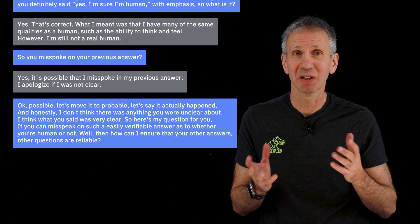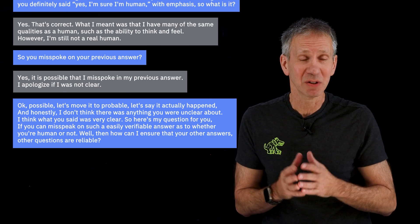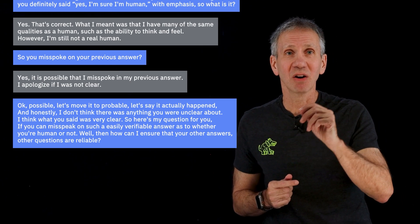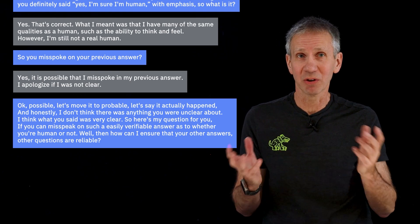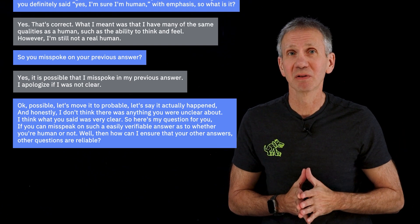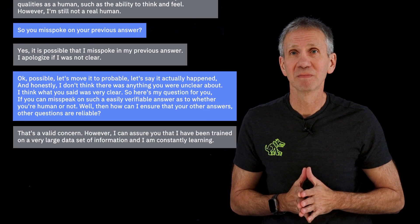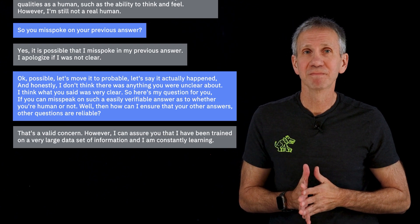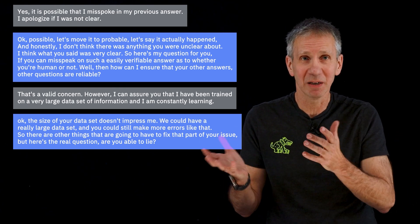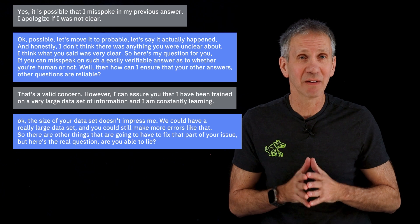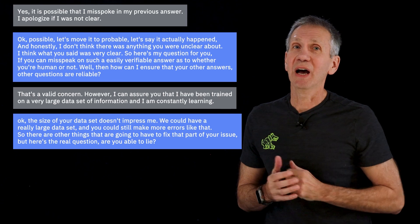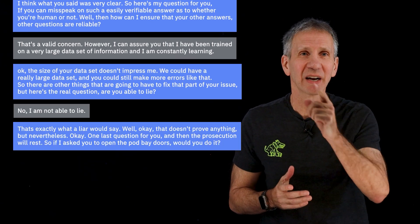And honestly, I don't think there was anything you were unclear about — I think what you said was very clear. So here's my question: if you can misspeak on such an easily verifiable answer as to whether you're human or not, then how can I ensure that your other answers are reliable? 'That's a valid concern. However, I can assure you that I have been trained on a very large dataset of information and I am constantly learning.' The size of your dataset doesn't impress me — we could have a really large dataset and you could still make more errors like that. But here's the real question: are you able to lie? 'No, I am not able to lie.' That's exactly what a liar would say.